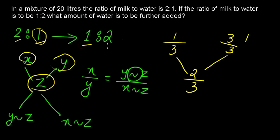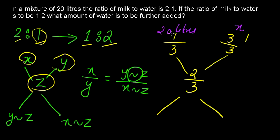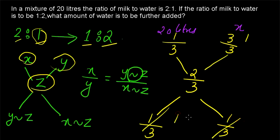The resultant ratio is 1 is to 2, so the quantity of water in the final mixture will be 2 by 3. We already know the mixture is 20 liters. Let the water to be added be x. Applying the rule of allegation: the difference between 3 by 3 and 2 by 3 is 1 by 3, and the difference between 2 by 3 and 1 by 3 is also 1 by 3. So the ratio is 1 is to 1, meaning x equals 20 liters.